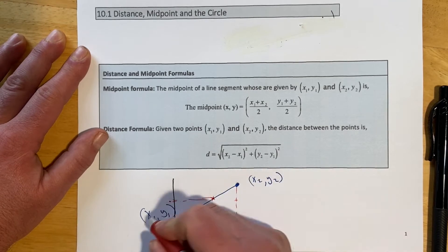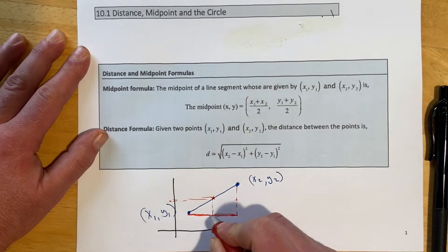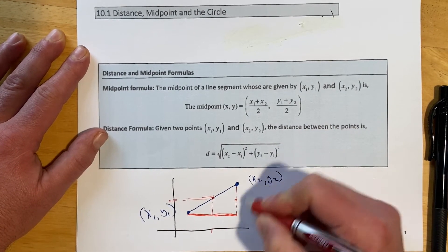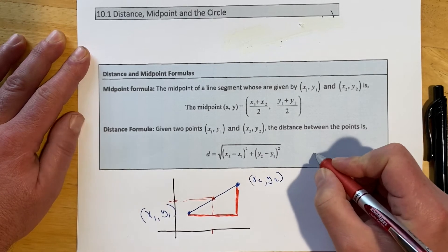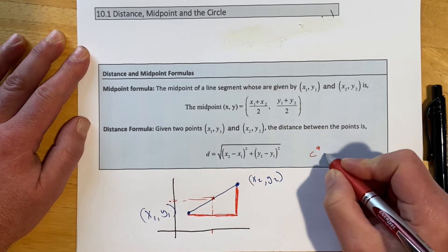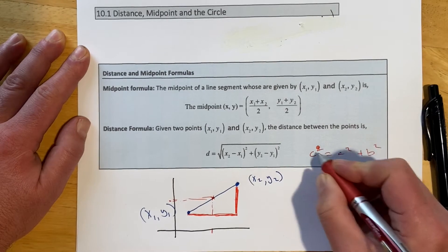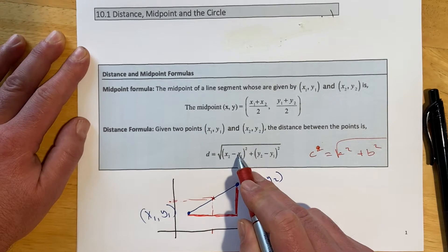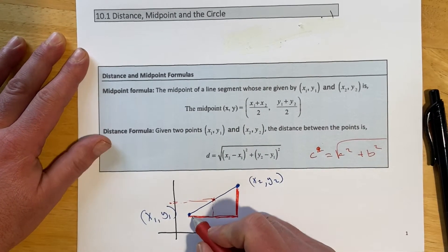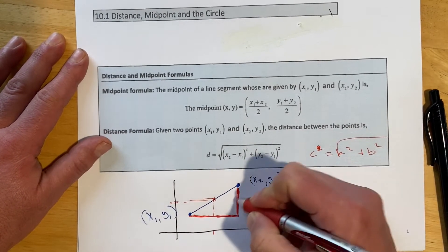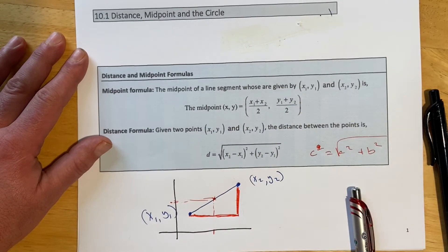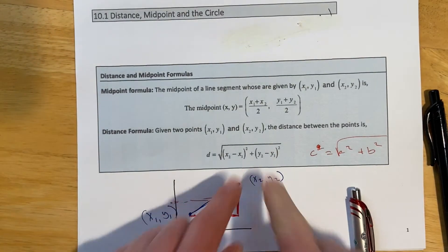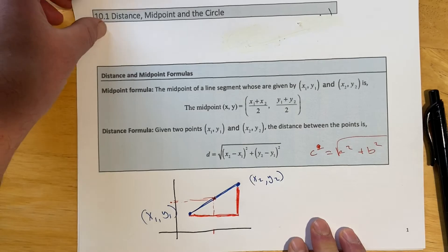For the distance formula, we go (x2 minus x1) squared plus (y2 minus y1) squared under a square root. You can see this is just the Pythagorean theorem: c² = a² + b², and if you take the square root of both sides you get exactly this formula. These differences are just the a's and b's — one leg squared plus the other leg squared, then the square root — and that gives the distance between the two points.